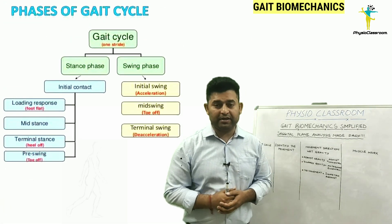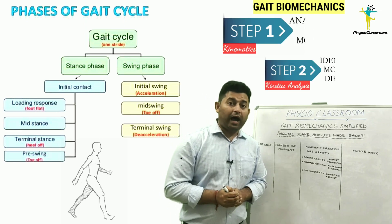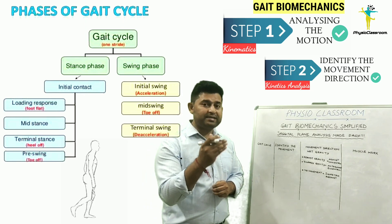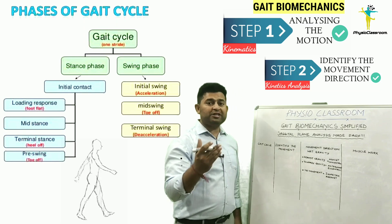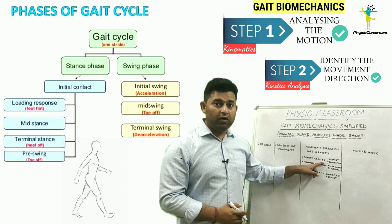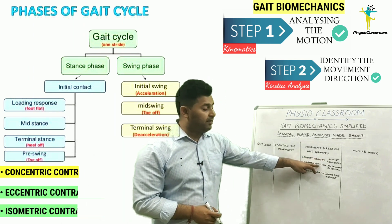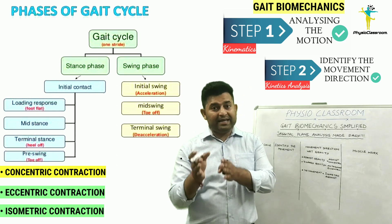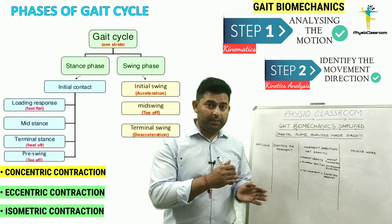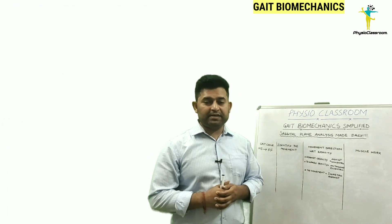Now let's apply this knowledge to learn gait biomechanics by taking examples from different phases of the gait cycle. We will answer two important questions: first, identify the movement taking place at the joint; second, relate that movement with respect to gravitational pull. If the movement is against gravity — concentric contraction of the agonist. If towards gravity — eccentric contraction of the antagonist. If no movement and the joint is stabilized — isometric contraction of the agonist.